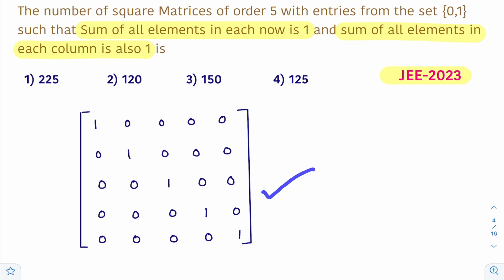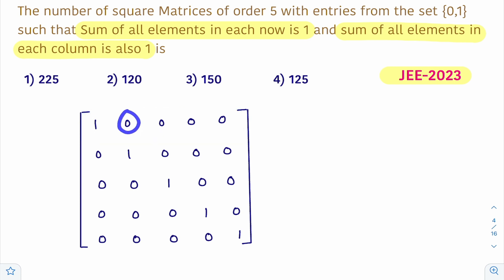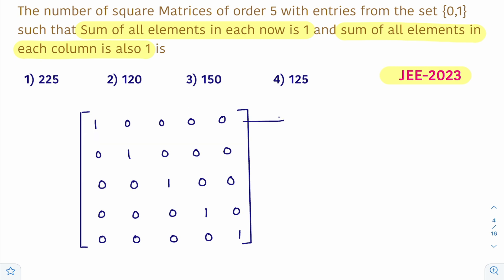To get such an arrangement, take the first row and place 1 at any one position. You can arrange 1 in the first place, second place, third place, fourth place, or fifth place — that is, 1 can be arranged in 5 ways.